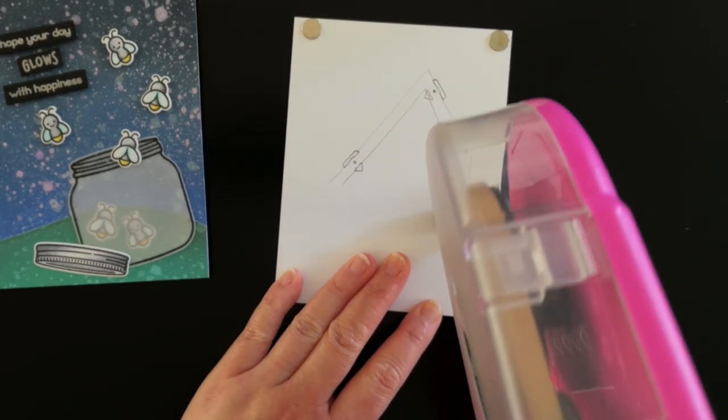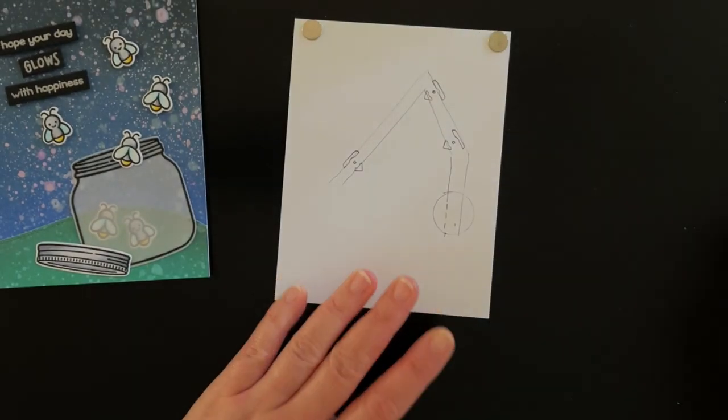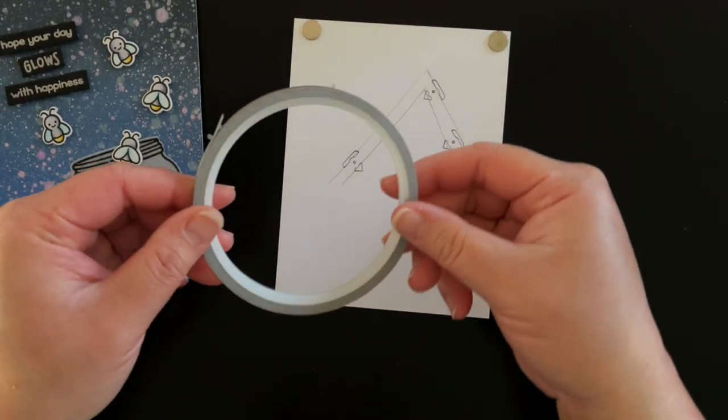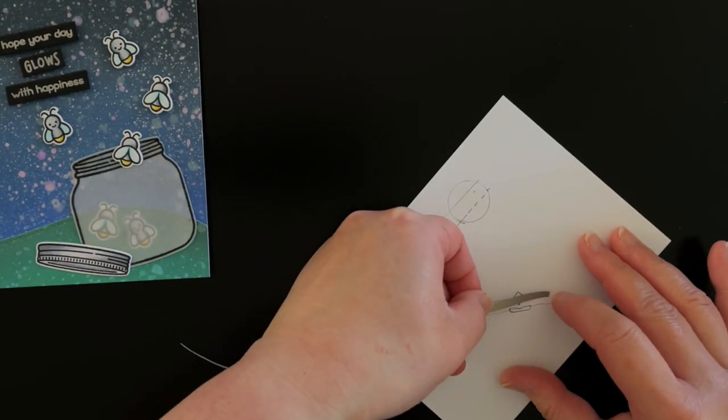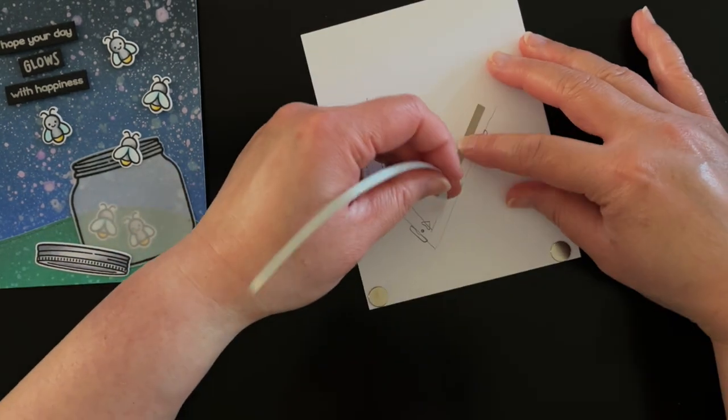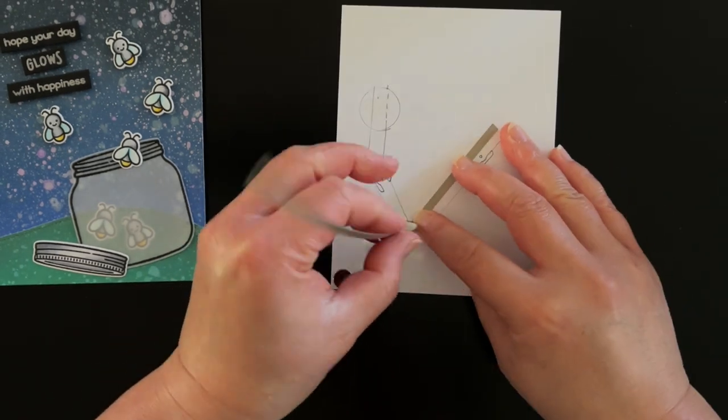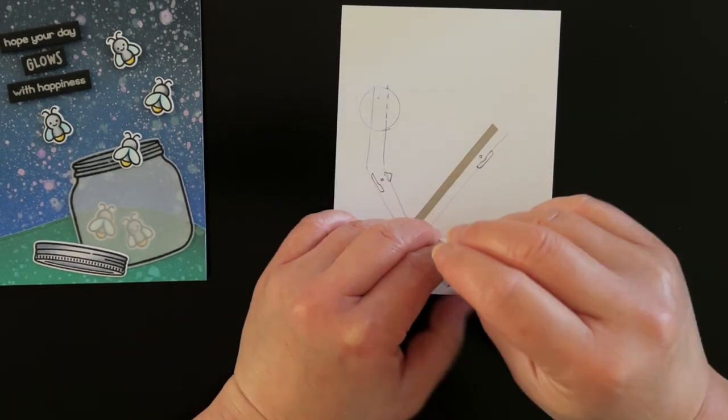I start by applying double-sided adhesive inside the circle. This will help to hold my battery in place. Then I add the conductive fabric tape starting with the negative side and run the tape along the line that touches the negative point of each traced outline connecting the three points.